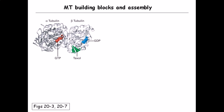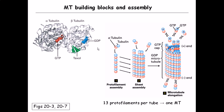Both beta tubulin and alpha tubulin have a site for binding with GTP and GDP. Alpha tubulin typically binds with GTP, while beta tubulin binds with GDP. There is also a site on beta tubulin for binding taxol — a drug that can block the attachment and construction of microtubules, which we'll cover later.